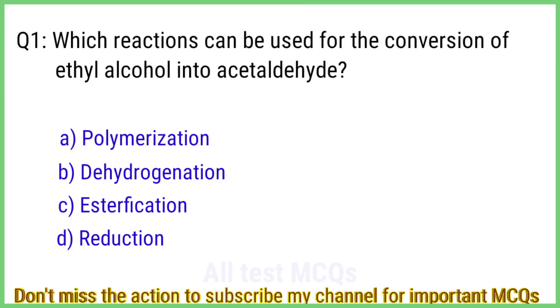Question number 1. Which reactions can be used for the conversion of ethyl alcohol into acetaldehyde? The right answer is option B: Dehydrogenation.